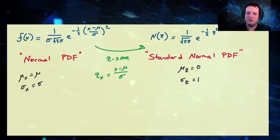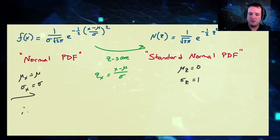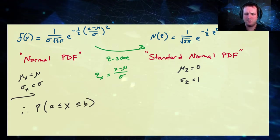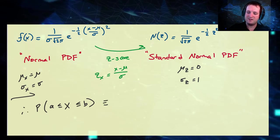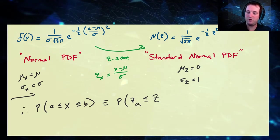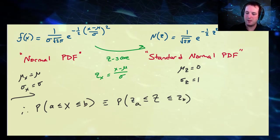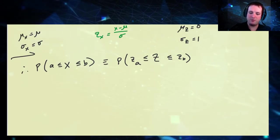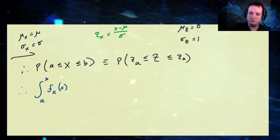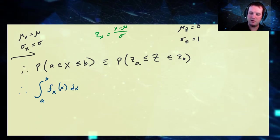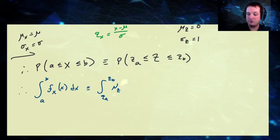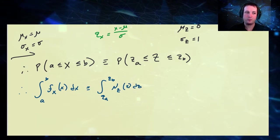This means that the probability that x is between a and b is actually the same as the probability that z, the standard normal random variable, is between the z-score for a and the z-score for b. From an integral perspective, the integral from a to b of f(x) dx is equal to the integral from z-score of a to z-score of b of the standard normal distribution dz. So they are the same.